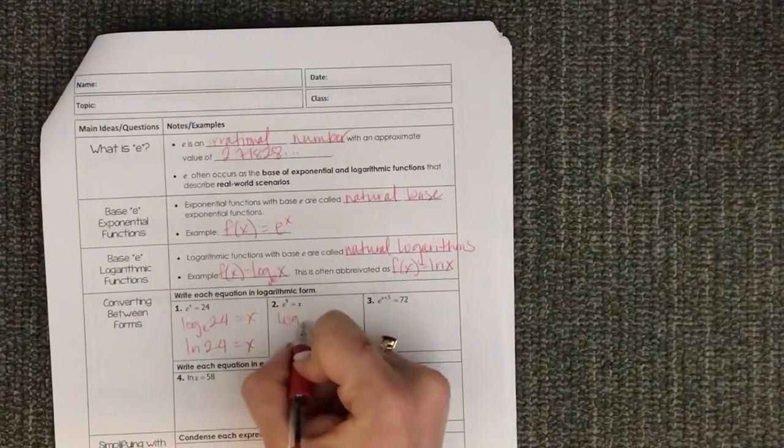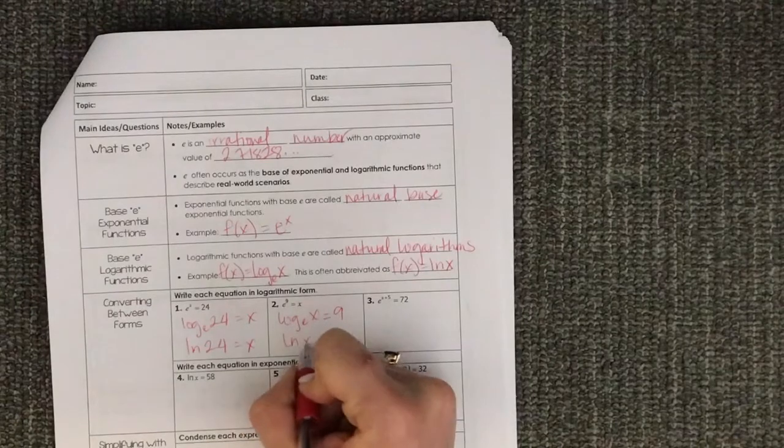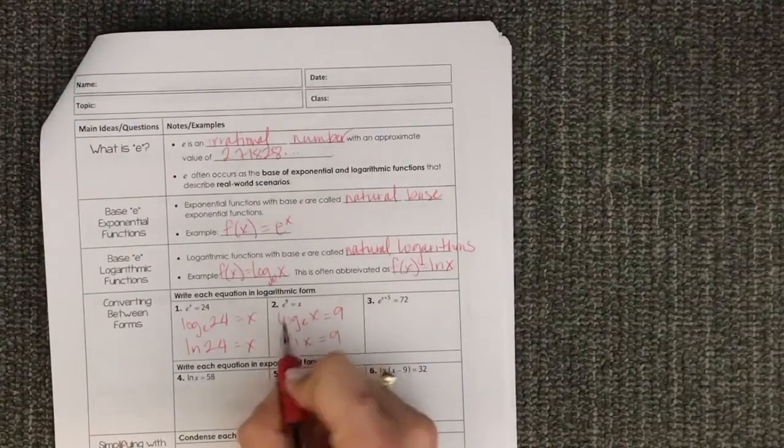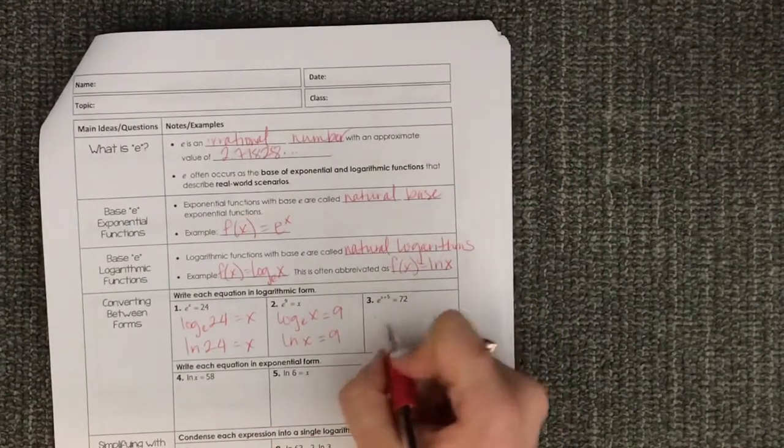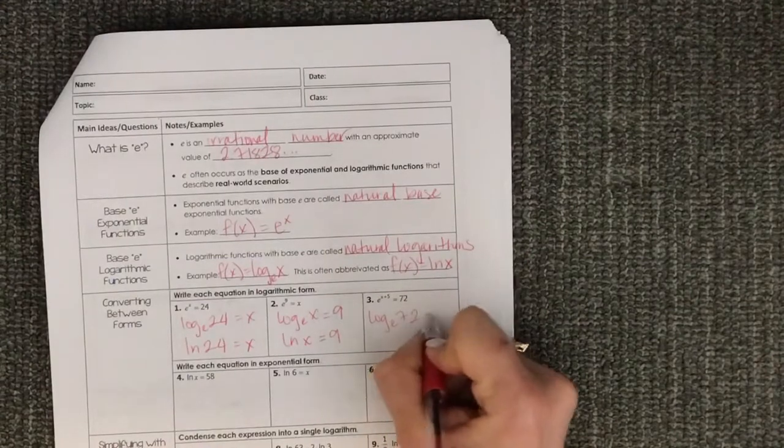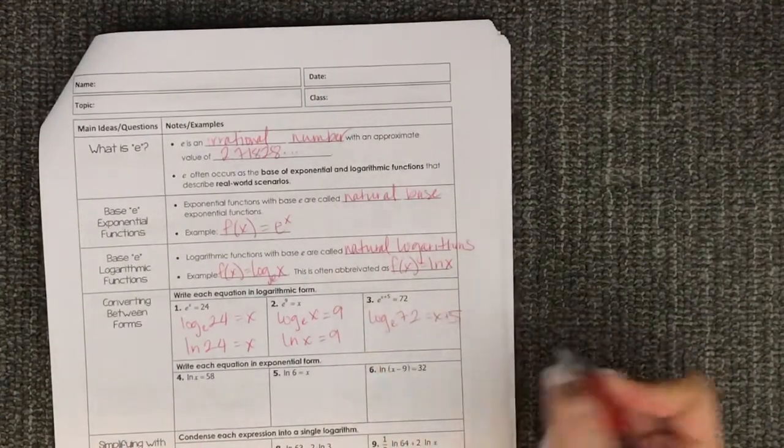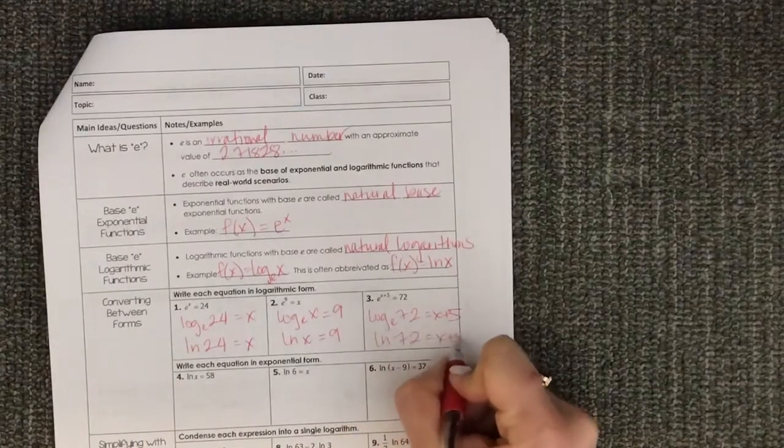Like this one is log base E of x equals 9. So log base E of x is the same as LN x. Here this would be log base E of 72 equals x plus 5, and so I'd want you to write LN of 72 equals x plus 5.